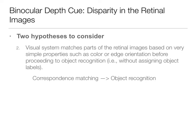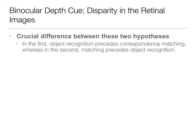That correspondence matching happens based on those properties, and then object recognition happens afterwards. So we'll talk about the validity of these two hypotheses in a series of studies that really helps us answer this. The crucial difference between them is which comes first — is correspondence matching happening before object recognition or is it happening afterwards?